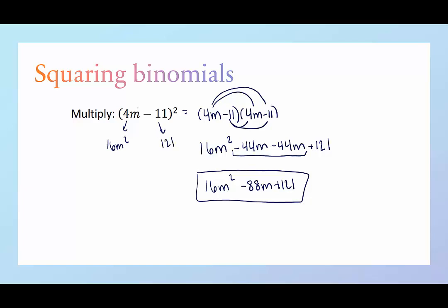And then for the middle, you take the two terms and multiply them together and double it. 4m times minus 11 is minus 44, doubled is minus 88m. So that's where the shortcut would come into play. Either way, we end up with this final answer.